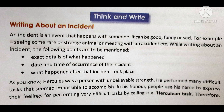We are learning about how to write an incident. An incident is an event that happened with someone — it can be happy, sad, funny, good, or bad. For example, seeing a rare or strange animal, or meeting with an accident. While writing about an incident, you have to follow three key points: first, write the exact details of what happened; second, write the date and time of occurrence; third, write what happened after that incident took place.